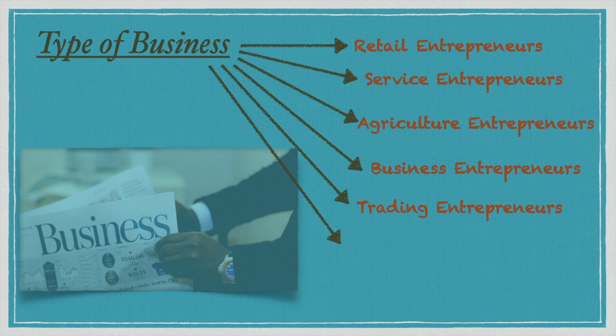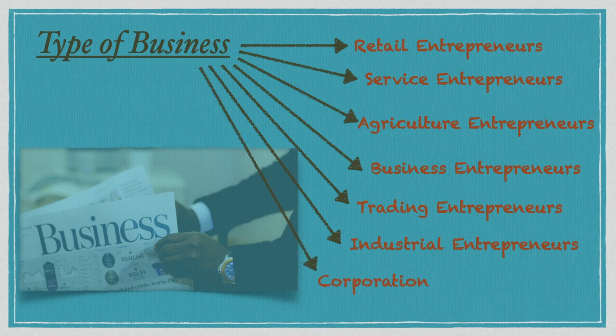Industrial entrepreneurs are manufacturers of products — identifying customers, manufacturing the products and servicing. Corporate entrepreneurs have an idea, start a business, run it and grow it, but within the organization. It's intrapreneurship. You can watch my previous video on entrepreneurship for more details.